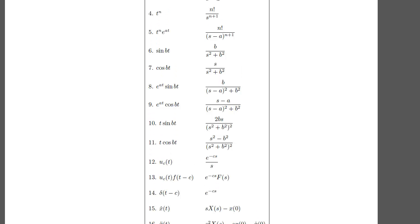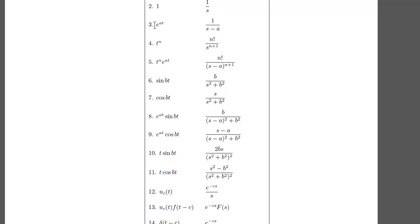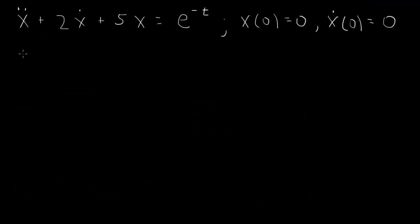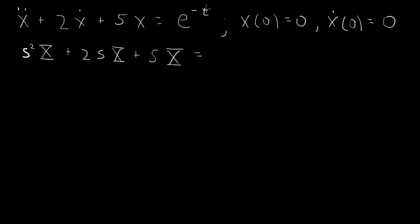We also need to transform the right-hand side. The right-hand side is an exponential function e to the at, and the Laplace transform of e to the at is 1 over s minus a. So the Laplace transform gives us s-squared times capital X plus 2s times capital X plus 5 capital X. And the Laplace transform of e to the minus t, where a is minus 1, becomes 1 over s plus 1.